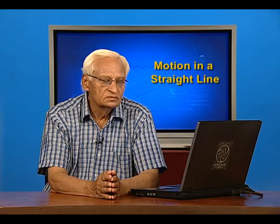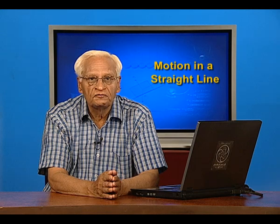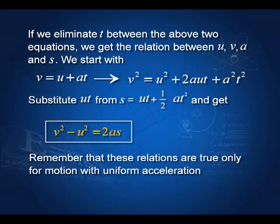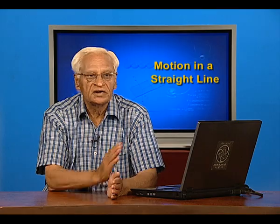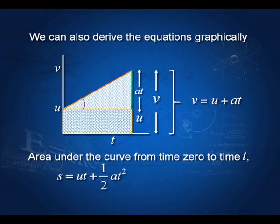I want to remind you that these relations are true only for uniform acceleration — this is the point which we generally forget. We can also derive these equations graphically. In the velocity-time graph, the distance covered equals the area of the rectangle plus the area of the triangle. Adding them gives v equal to u plus at, and the area under the curve gives s equal to ut plus half at squared.